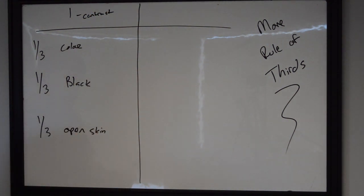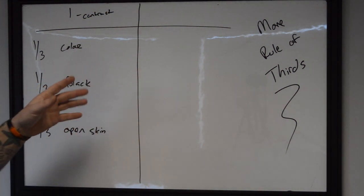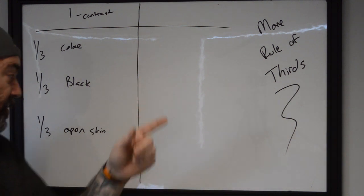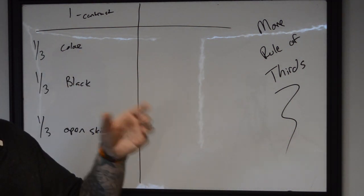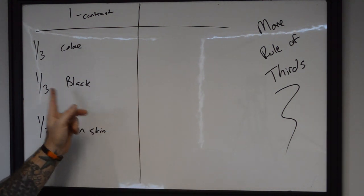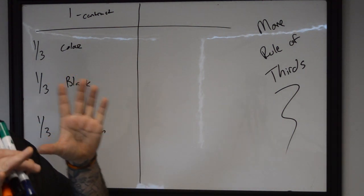We're going to see this most often applied in traditional tattoos because they have very strong line weight, which is usually black. They're going to have black shading inside of each one of the elements inside of it, which usually makes up about one third of the total design.